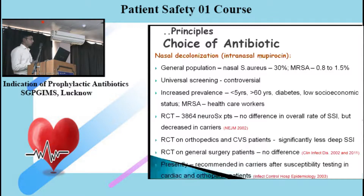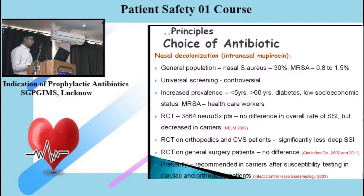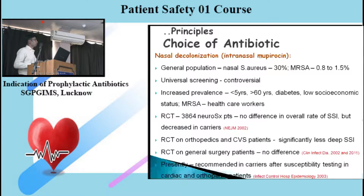An RCT on general surgery showed no difference in SSIs among groups using or not using intranasal mupirocin. The present recommendation — though around 10 years old — is that in patients who are carriers for nasal Staph aureus, intranasal mupirocin should be added when they are undergoing cardiac or orthopedic surgery, especially when implantation such as plating, nailing, or knee implantation is carried out.